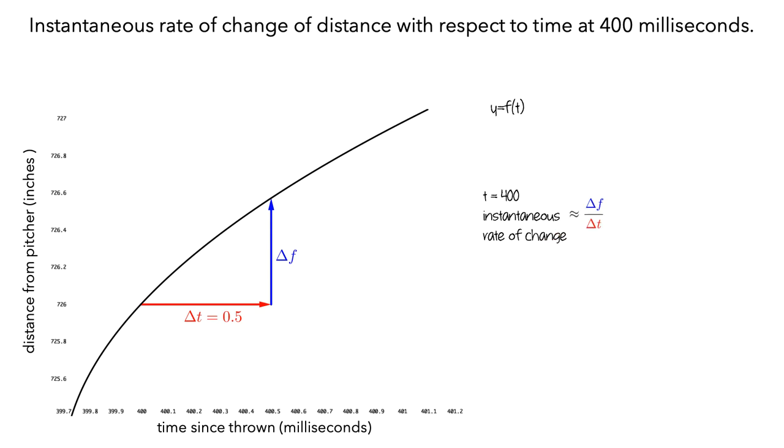Delta f is the difference between the y-coordinates of the two points we graphed. So here, it would be f of 400 plus the additional 0.5 milliseconds minus f of 400. And we divide this by delta t, which is half a millisecond.